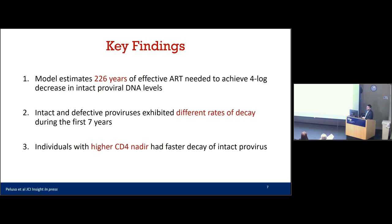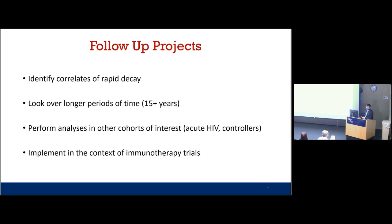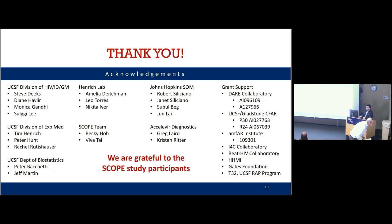The key findings are that the model estimates over 200 years of effective ART would be needed to achieve a four-log reduction in levels of intact proviral DNA; that intact and defective proviruses exhibited different rates of decay during the first seven years on therapy; and that individuals with higher CD4 nadirs had a faster rate of decay of intact provirus. Follow-up projects include looking at correlates of rapid decay, individuals on ART for over a decade, those who began treatment during acute or early HIV infection, and implementing this assay in immunotherapy trials. This assay is becoming the gold standard for measuring the intact reservoir.